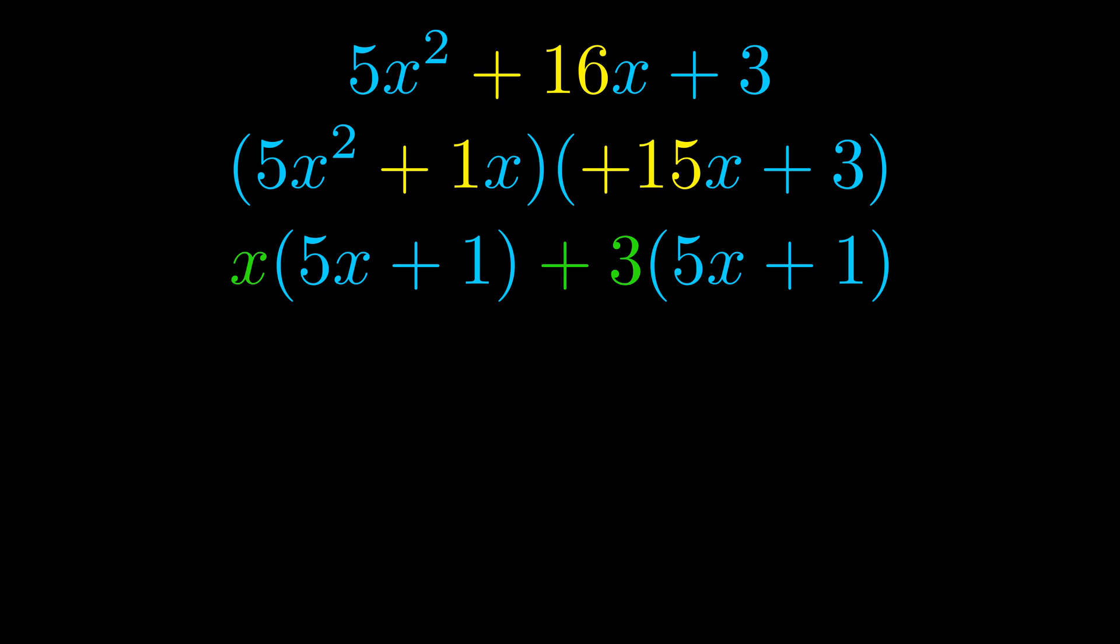Notice also how what remains inside of the parentheses is the same in both cases. The blue values are the same. Those blue values will become one of our factors and we will combine the two green values, the GCFs that we pulled out, to get the other one. And that is our fully factored equation.